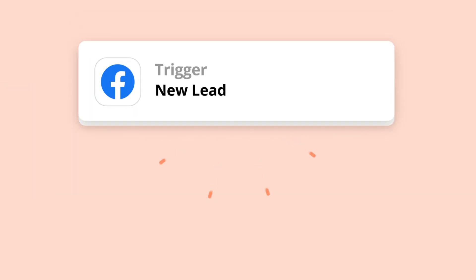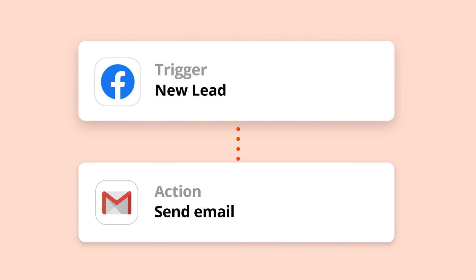Every automated workflow you create needs rules to follow. With multi-step zaps, you can add lots of rules to build smarter automated workflows. One type you can add is a filter, to make sure your zaps are performing actions only on the items you want. By default, a zap fires every time it finds new information that matches your trigger.